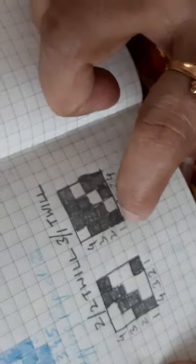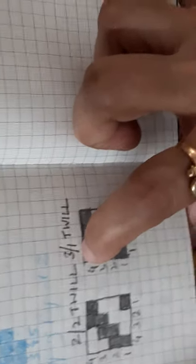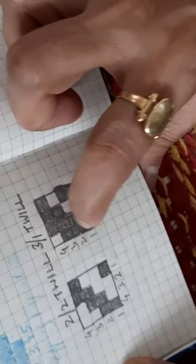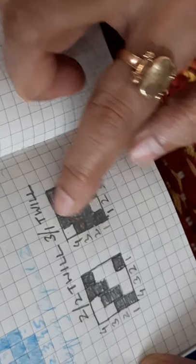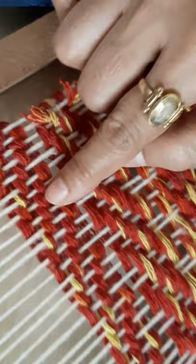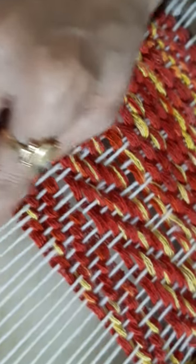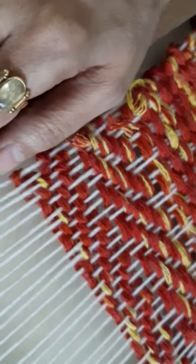Instead of doing from here to here, I can do this one first, this one second, third, fourth. Right? So what will happen is the diagonal line will go in the opposite direction. Like the diagonal line is going like this, then the diagonal line will start going in the opposite direction. Thank you.